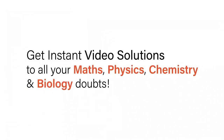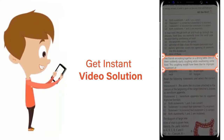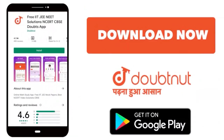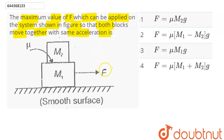With DoubtNet, get instant video solutions to all your maths, physics, chemistry and biology doubts — just click the image of the question, crop it, and get an instant video solution. The question is: what is the maximum value of F that can be applied on the system shown in the figure so that both blocks move together with the same acceleration?